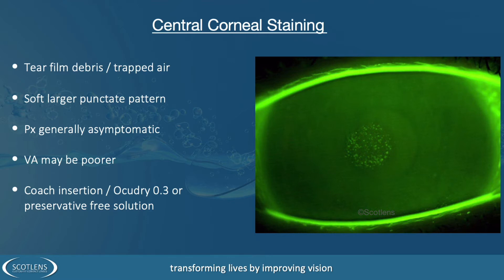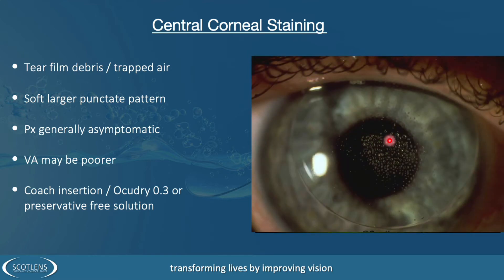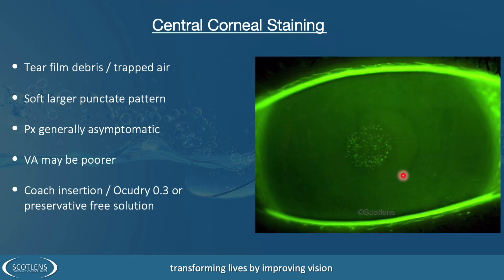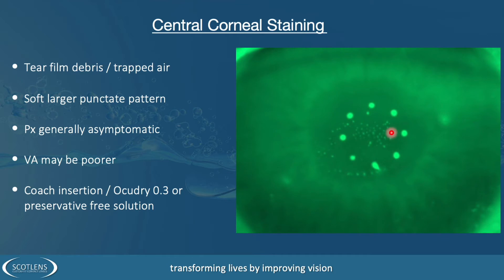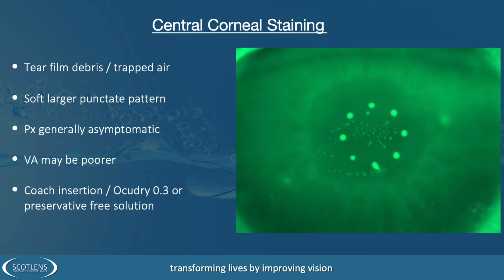You can see that the pattern of staining here matches the bubble pattern caused underneath a contact lens. For this type of punctate staining that is spread out, we want to coach insertion and removal technique and also change the patient to using a drop like Ocudry 0.3, which is a preservative-free lubricating drop for lens insertion.